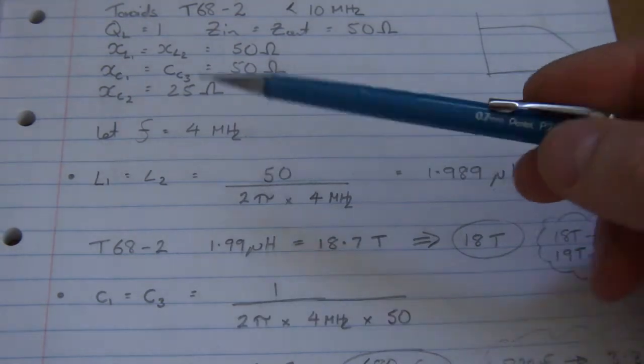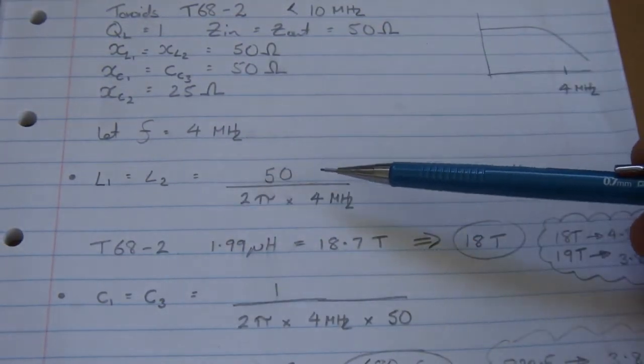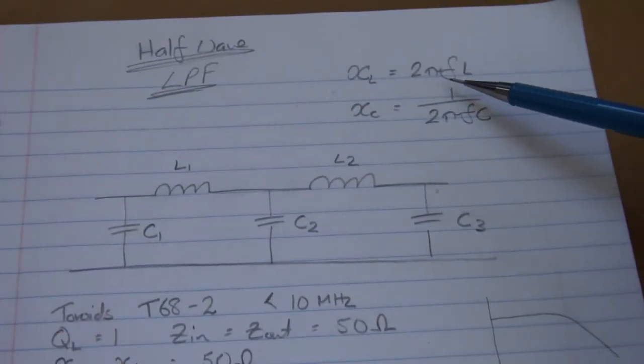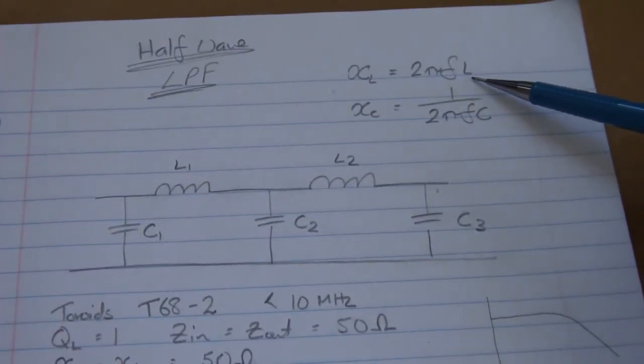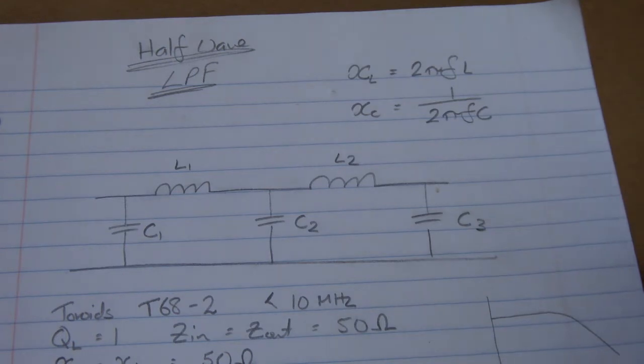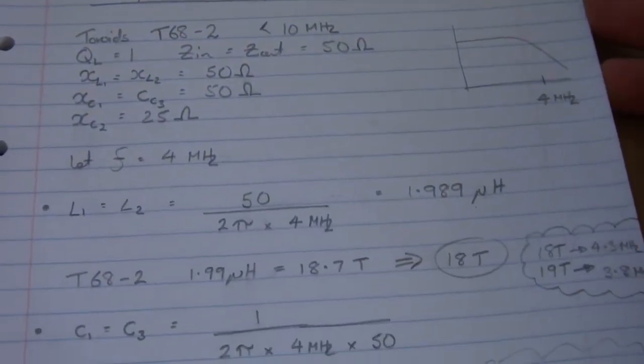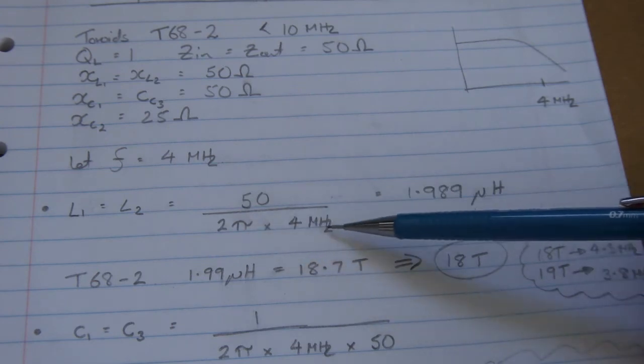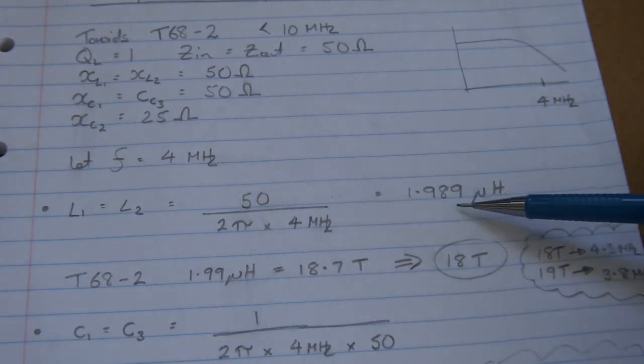For our first one, for the two inductors L1 and L2, if we rearrange this formula up here and make our inductance the subject, we can then substitute in our values. So 50 ohms over 2 pi times 4 megahertz gives us 1.989 microhenries.